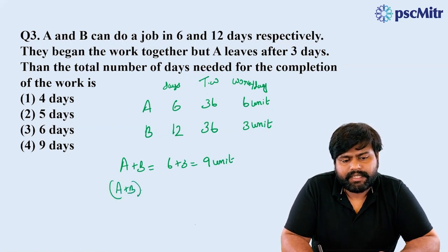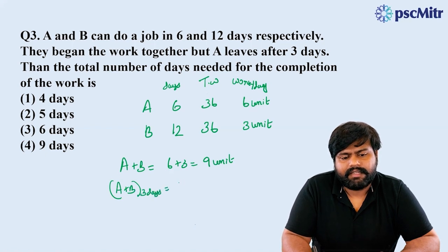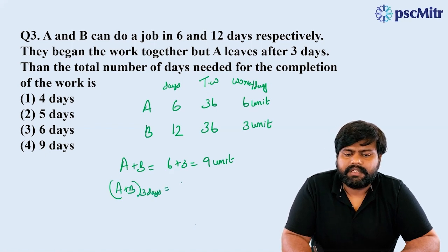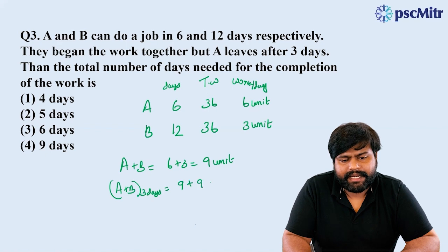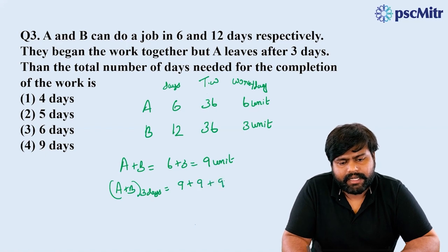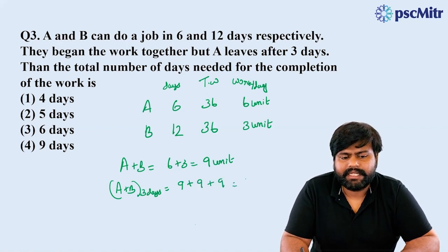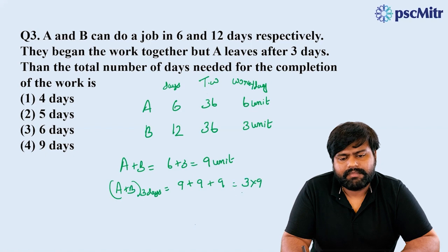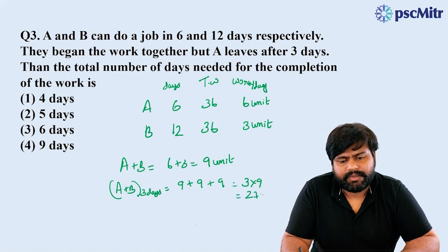A and B work together for three days. First day 9, second day 9, third day 9 — that's how we do it. 3 into 9: that's how 27 units of work are already completed.